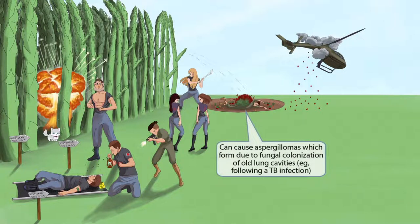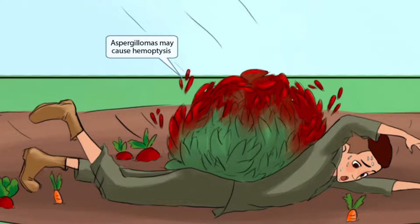We've added a big crater in the ground from an artillery blast. The woman chopping caused a big ball of asparagus to fly and land on an enemy soldier — this ball represents an aspergilloma, a fungus ball typically found in the lungs. The crater is filled with tubers such as carrots and beets, which are a symbol for Mycobacterium tuberculosis, representing a prior TB infection. The crater itself represents a cavitary lesion. So Aspergillus can cause aspergillomas, which form due to fungal colonization of old lung cavities, for example following a TB infection. Zooming up, the fungal ball smashed red beets, sending red beet juice flying — this juice resembles blood and should make you think of hemoptysis, so aspergillomas may cause hemoptysis.